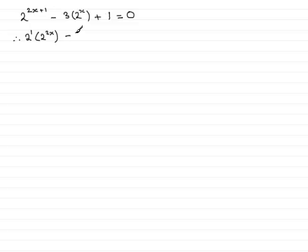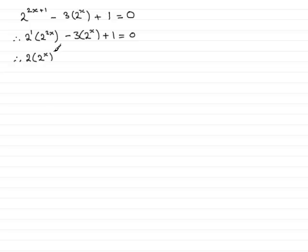Then we have minus 3 multiplied by 2 to the power x plus 1 equals 0. Now 2 to the power 1 I can just leave as 2, and 2 to the power 2x I can write as 2 to the power x all squared. Then minus 3 multiplied by 2 to the power x plus 1 equals 0.